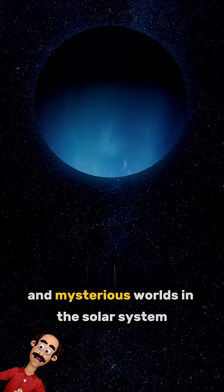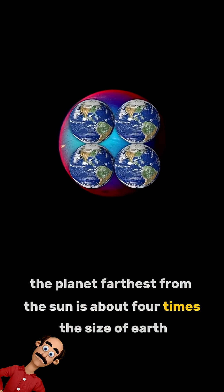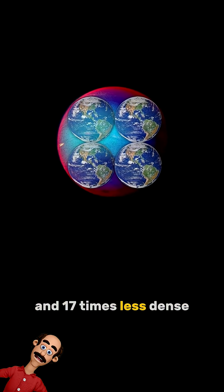Neptune is one of the most fascinating and mysterious worlds in the solar system. The planet farthest from the Sun is about four times the size of Earth and 17 times less dense.